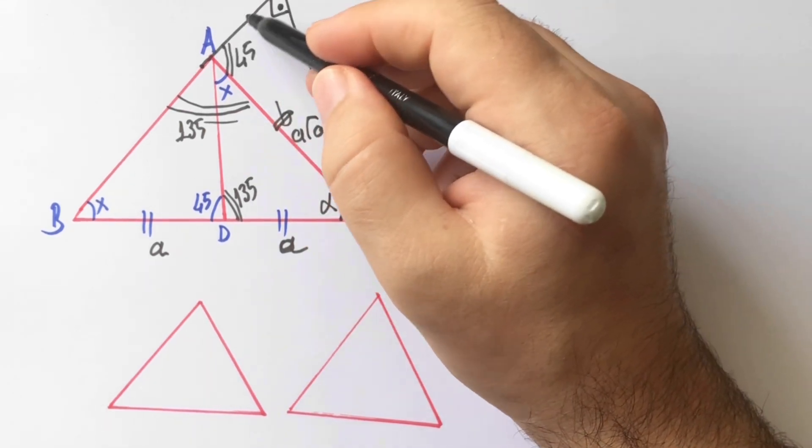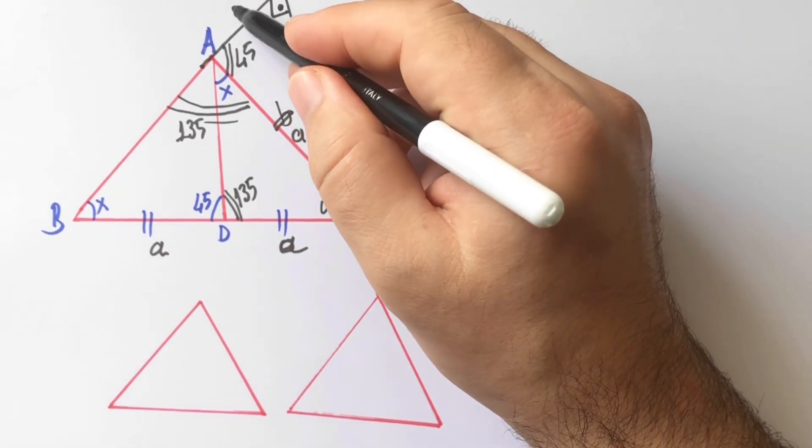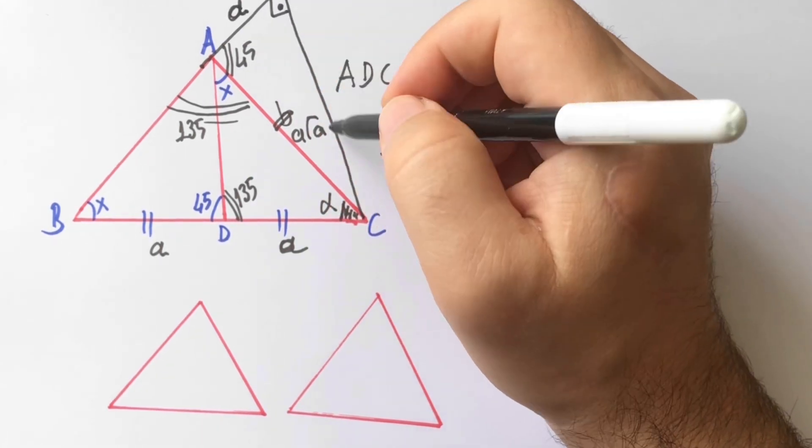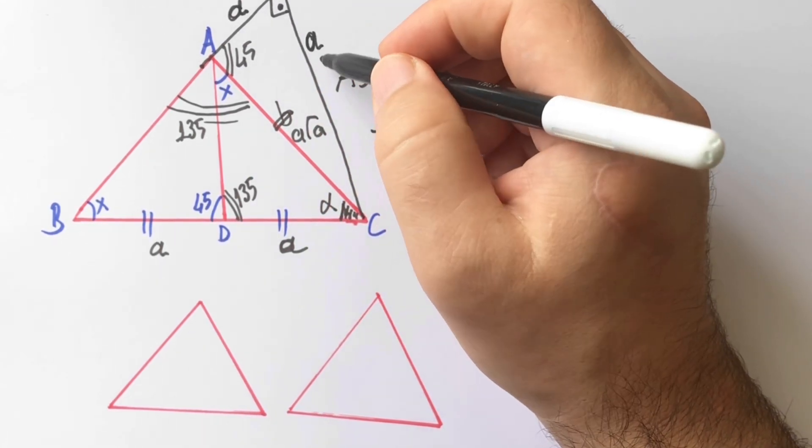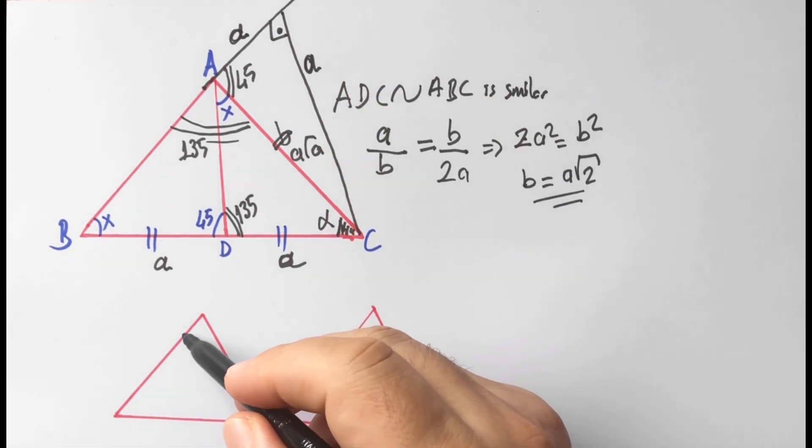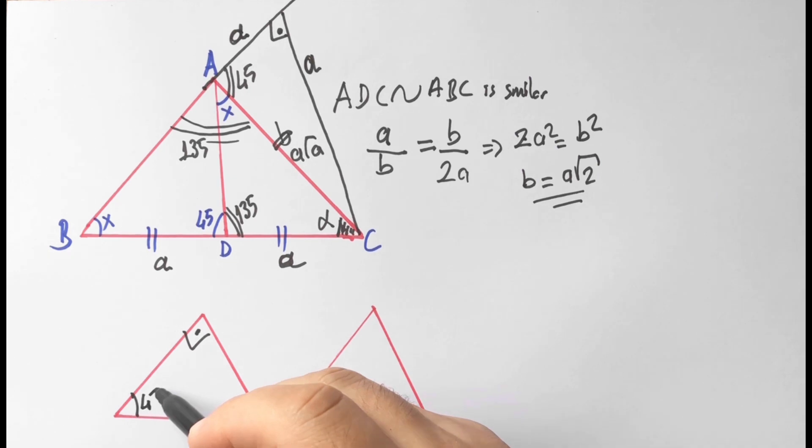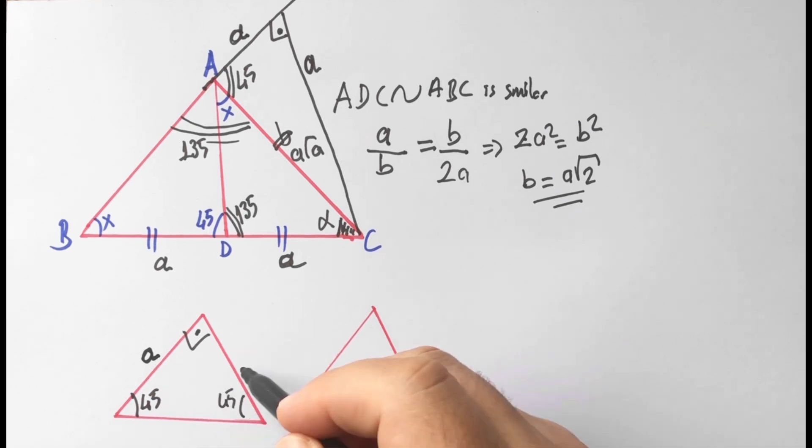We know that here is A units and here is A units. Let's remind you, if the top of the triangle is 90 degrees and the base is 45 degrees, therefore here is A, A, and the hypotenuse must be A root 2.